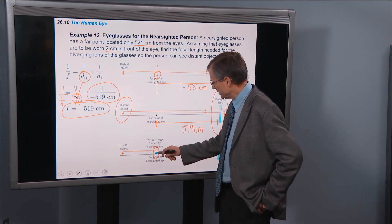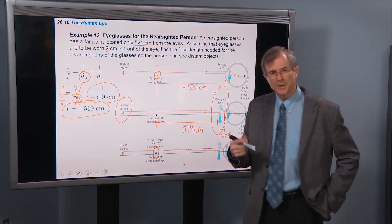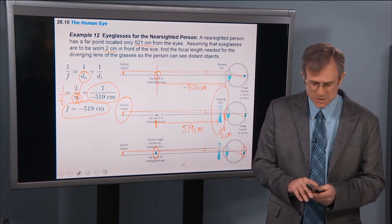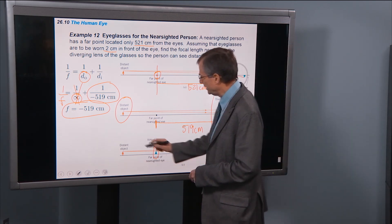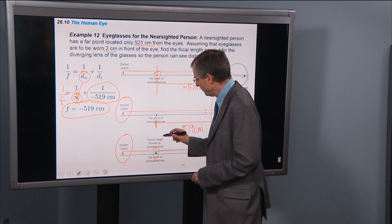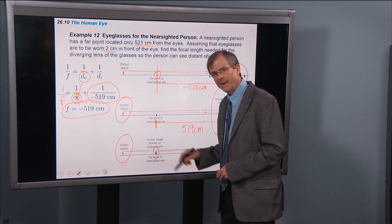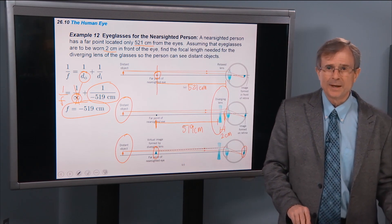And that virtual image is formed right there where you can already focus. And so you basically trick the eye into being able to see a distant object clearly by placing it at its far point of that nearsighted eye.